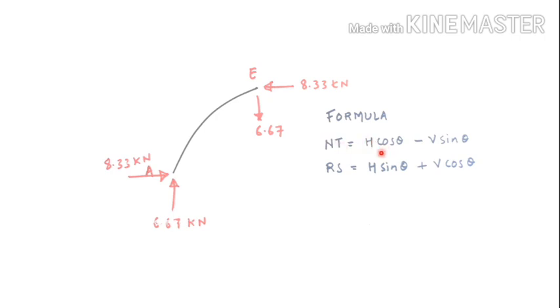Now you need to know the formula of normal thrust and radial shear. Normal thrust equals H cos theta minus V sin theta. Radial shear equals H sin theta plus V cos theta. You see the sign of H will not change but the sign of V will change. Here it is minus, it can be positive sometimes. Here it is plus, it can be negative sometimes.